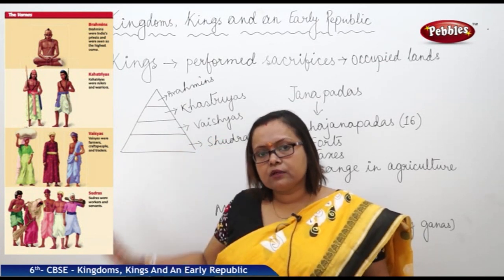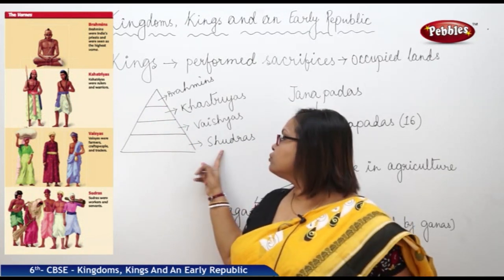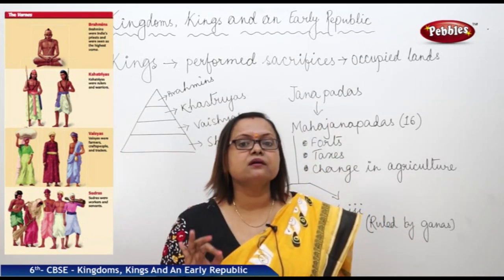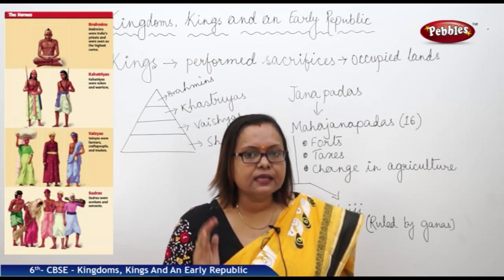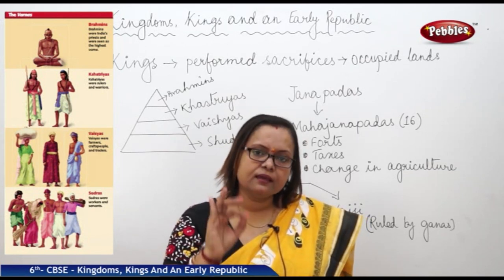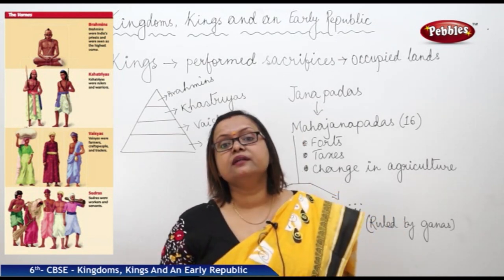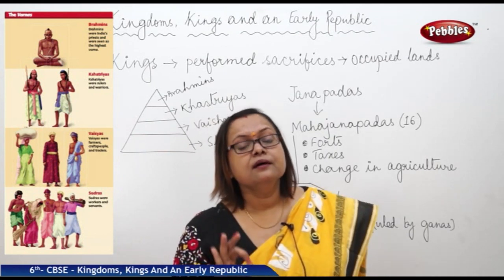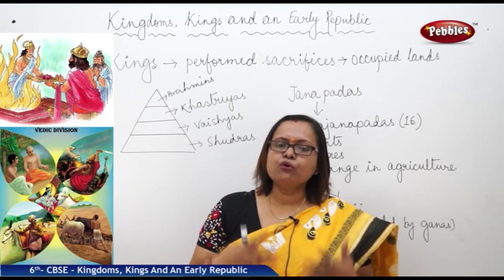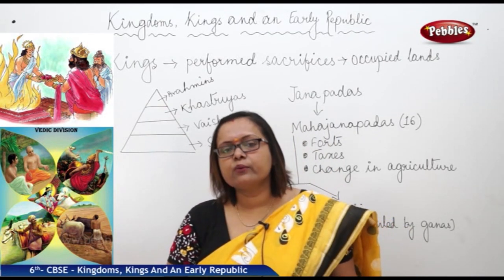The rest — all the common people serving these three classes — are considered Shudras. They were more in number, and all women were also considered in this lowest category. They had no chance to climb the hierarchy in society because they were only given work to perform household chores and to serve the three upper classes. They had no liberty, even in some of the king's families.